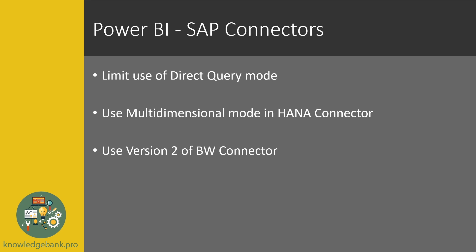To wrap up with key takeaways: limit the use of direct query mode and use import mode as much as possible. Use the multidimensional mode in the HANA connector — I've not seen anybody successfully use relational mode for a production-quality report. And use version 2 of the BW connector, which is the default. That's it for this video. We'll have a series of videos on SAP connectors coming out, so stay tuned.